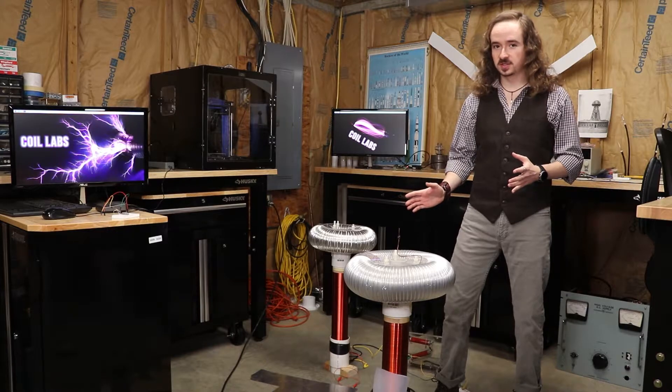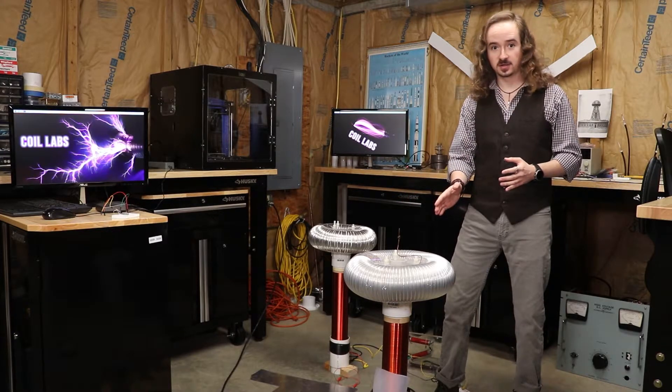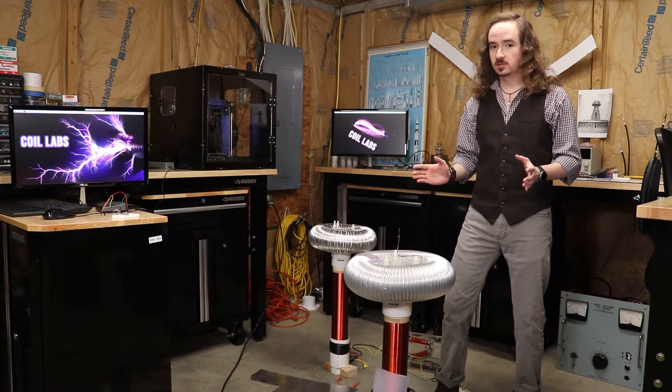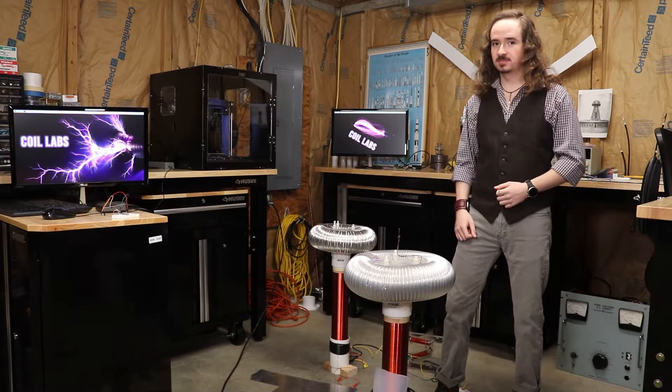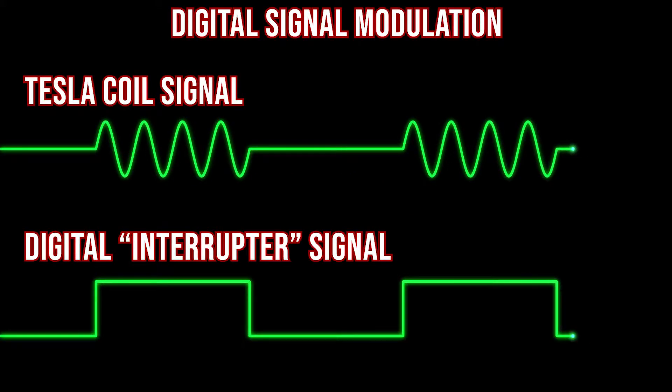First we need some kind of modulation scheme to encode data onto the carrier signal of the Tesla coil. Keep it simple, just use on-off keying to encode binary data, zeros and ones. To do that I need a way to interrupt the Tesla coil based on the digital signal we want to communicate.